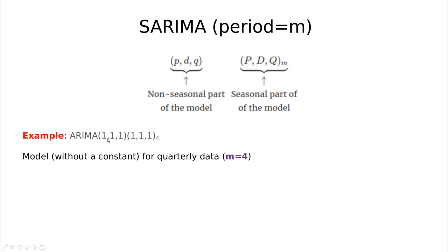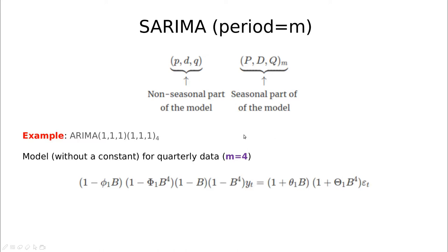For example, ARIMA(1,1,1)(1,1,1)[4] means we have an autoregressive part day by day, a moving average part day by day, but also by quarter in this case. So every year is divided into four parts and we have some kind of influence of one quarter to the next quarter.